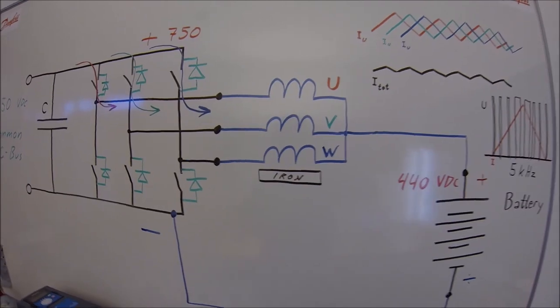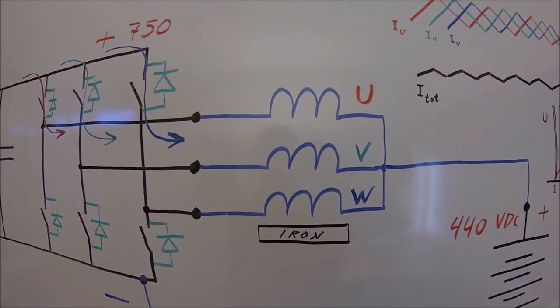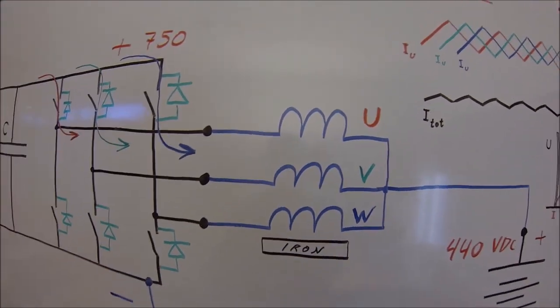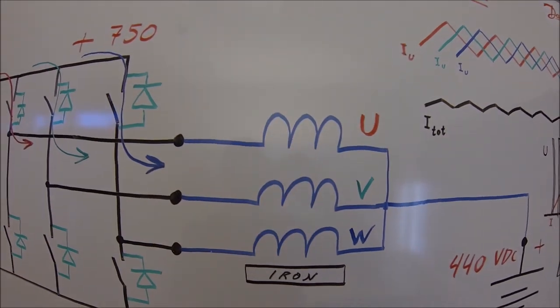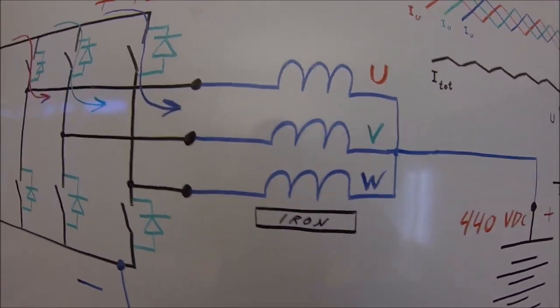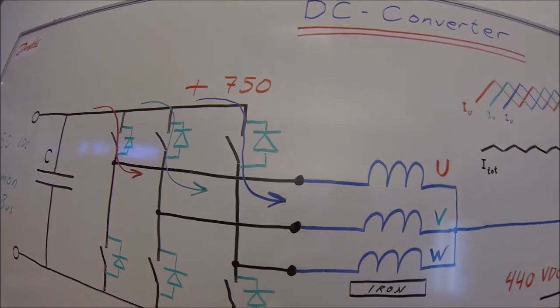What we do is called DC boosting. We are boosting the voltage over the chokes in such a way that we can have the current flowing in this direction.